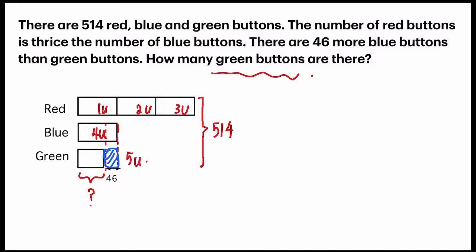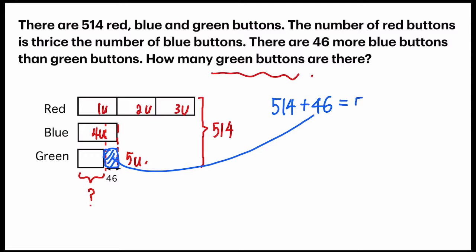So my first step is 514 plus 46, which is adding this blue color portion. I'll get 560. That means 5 units equals 560.